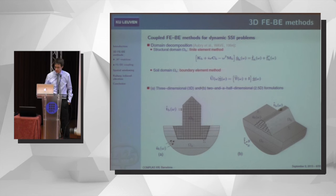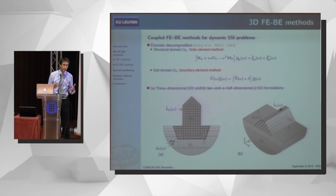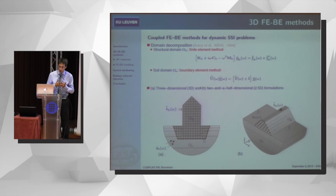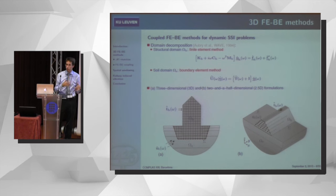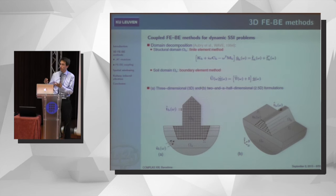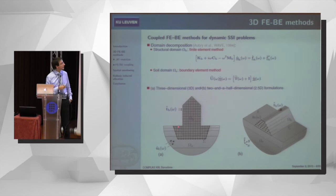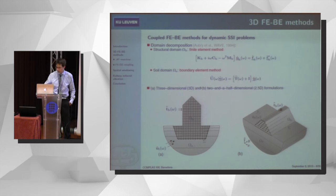The advantage of the boundary element method is that you only need a surface discretization instead of a volume discretization, and the unbounded nature of the soil is inherently accounted for in the formulation — so you don't need absorbing boundary conditions or perfectly matched layers. When you use a boundary element formulation, you need the Green's function of that medium. You can either use full-space fundamental solutions, which are analytically known, but then you need to discretize the free surface and all layer interfaces. Another approach is to use Green's functions of a layered half-space, which must be computed numerically, but in that case you only need to discretize the soil-structure interface.